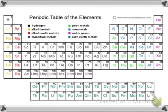We've talked about how to determine how many valence electrons an element has by using the periodic table. If we take a look at the first column, all of these elements have one valence electron. Then all of these elements have two valence electrons.